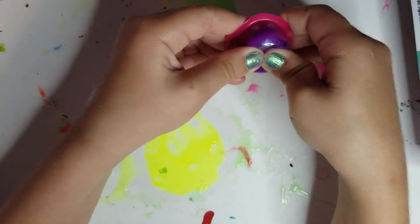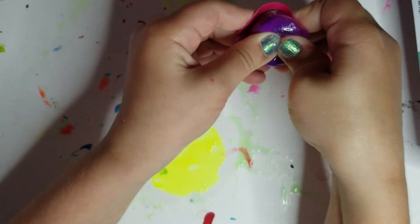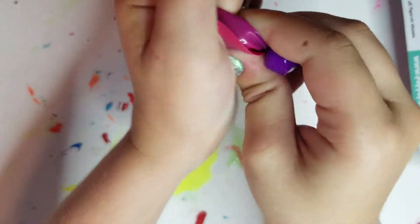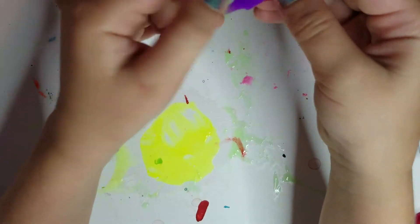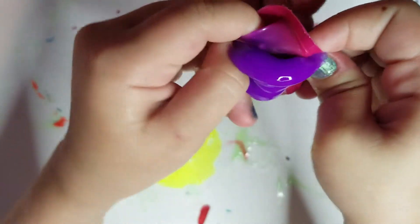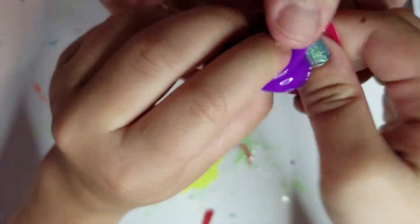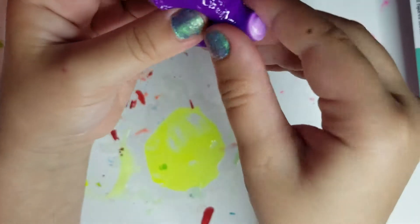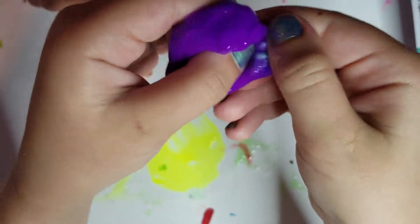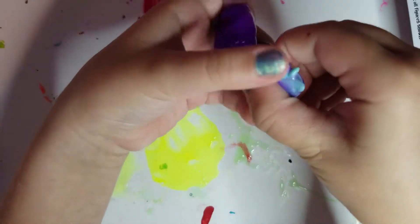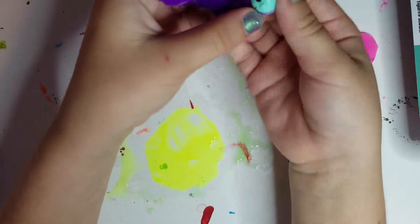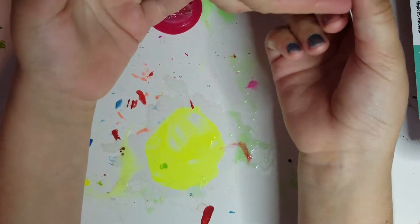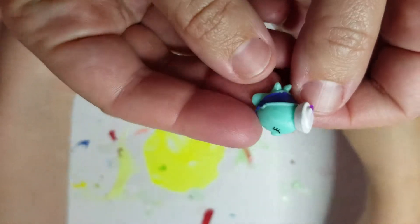Let's pop it open and see what we get. This one's easy to open. There we go. Whoa, that was really loud! What do we got in here? Let's see. It looks like some sort of seahorse. What is it? It looks like some whale or something.